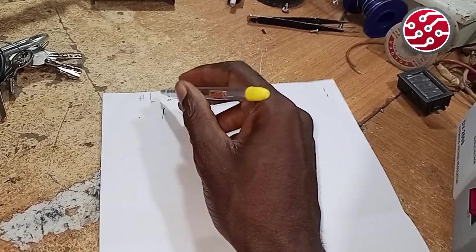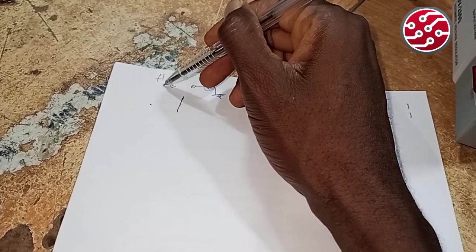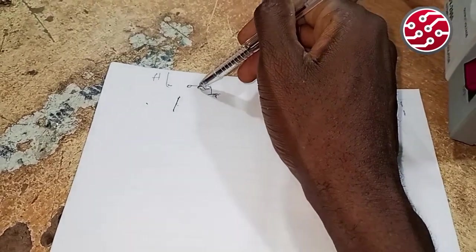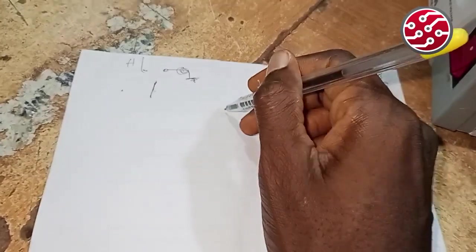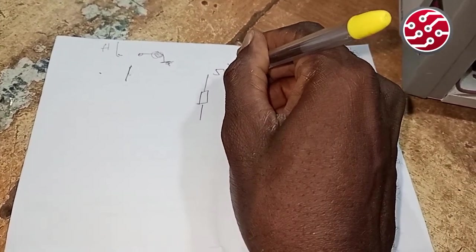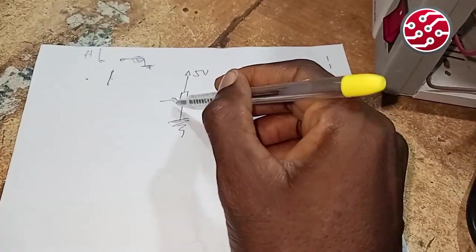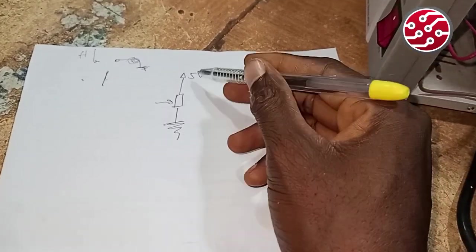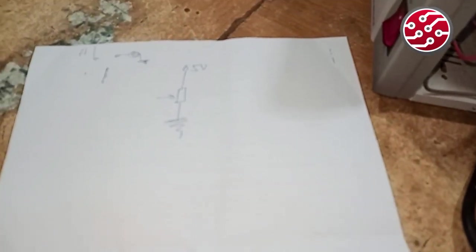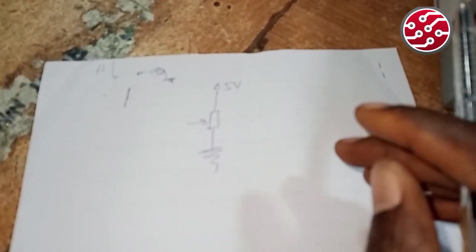When they vary, this is where the voltage you vary between high and low. Let me sketch. Normally here might be 5 volts, here might be ground. So when you are varying it, you're varying it between this ground and 5 volts.